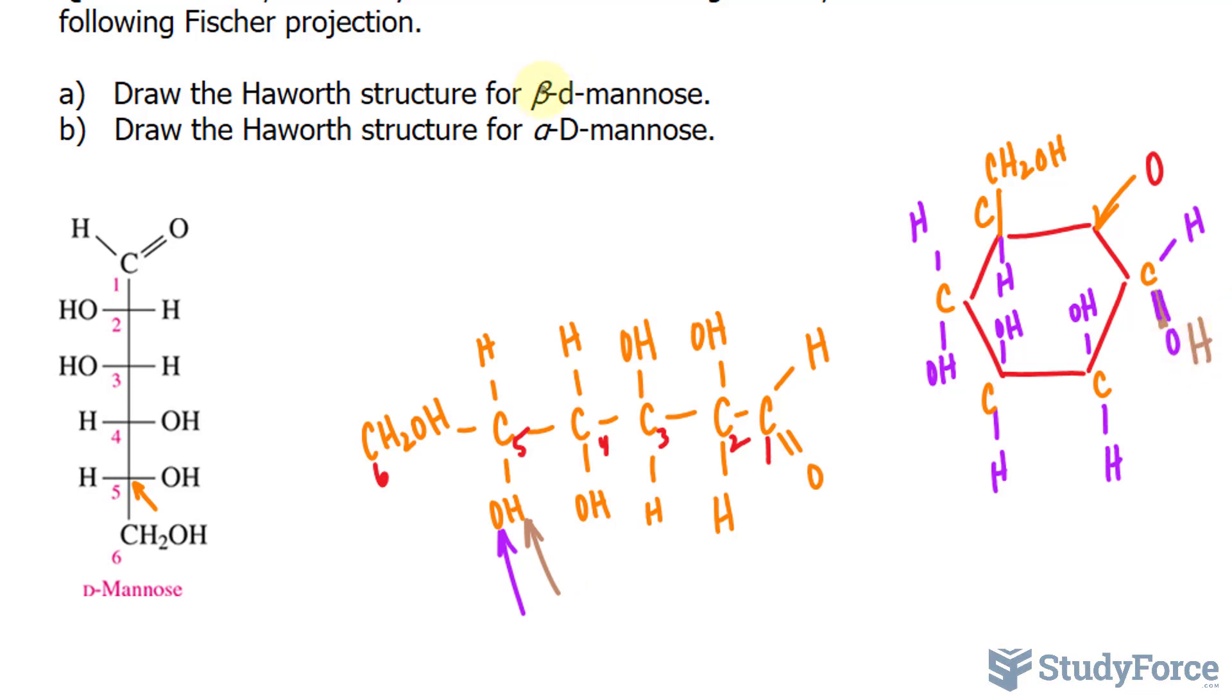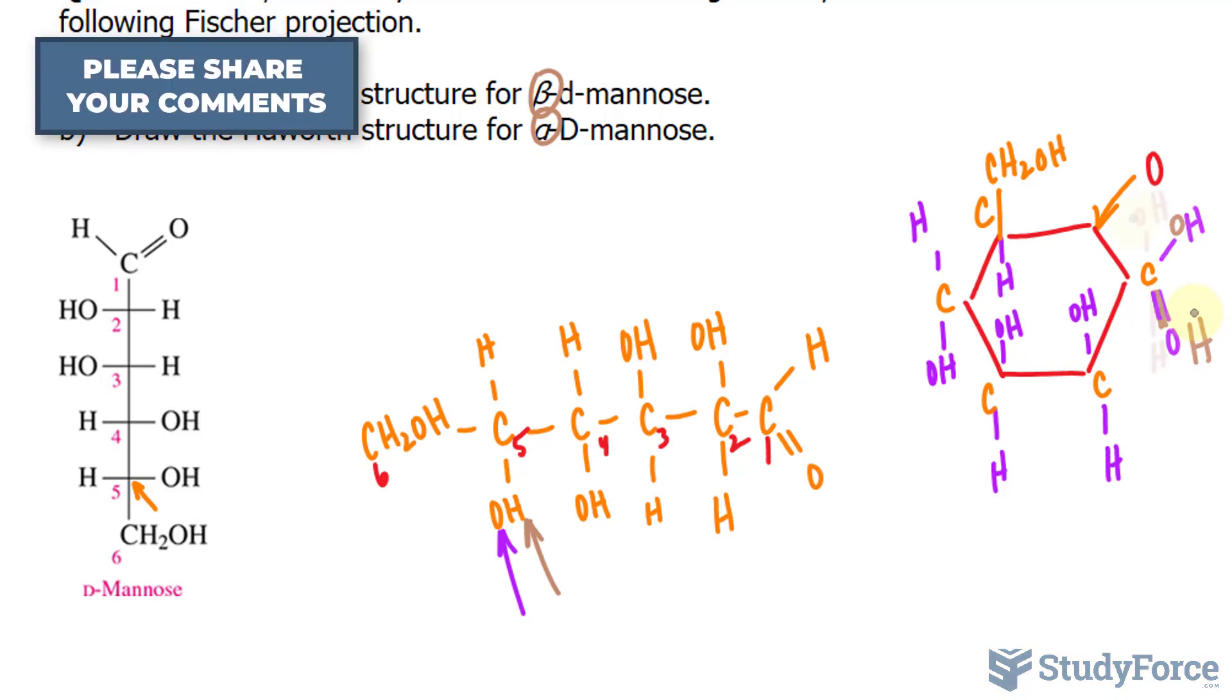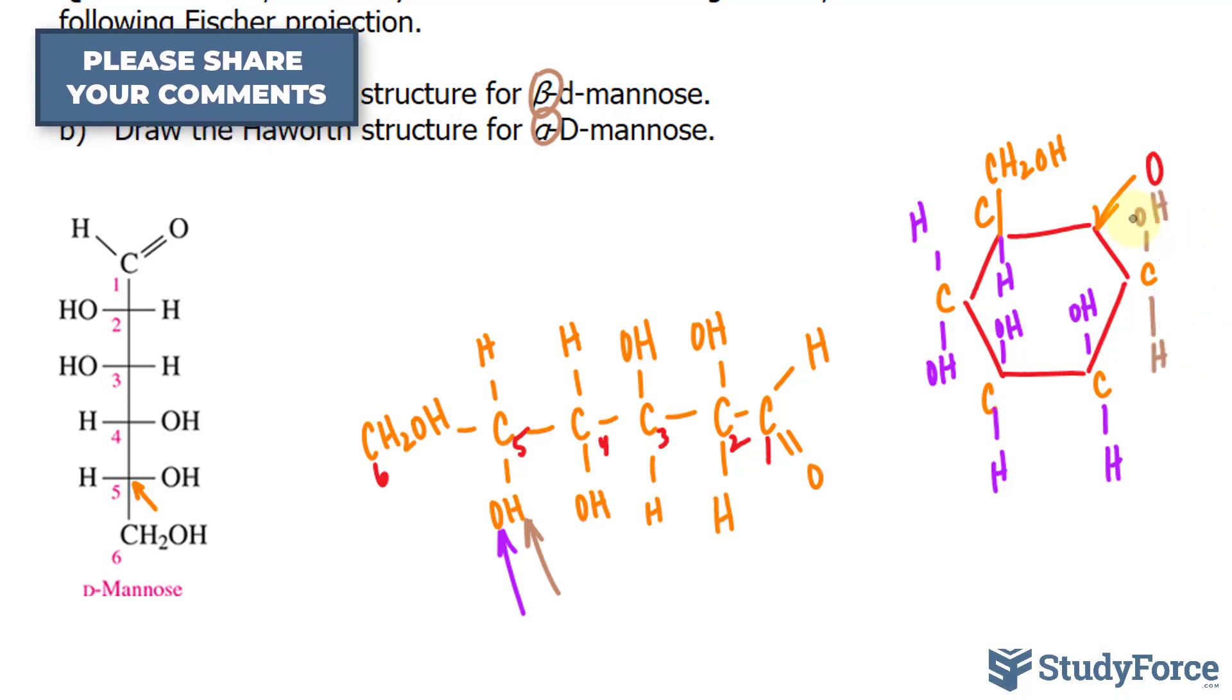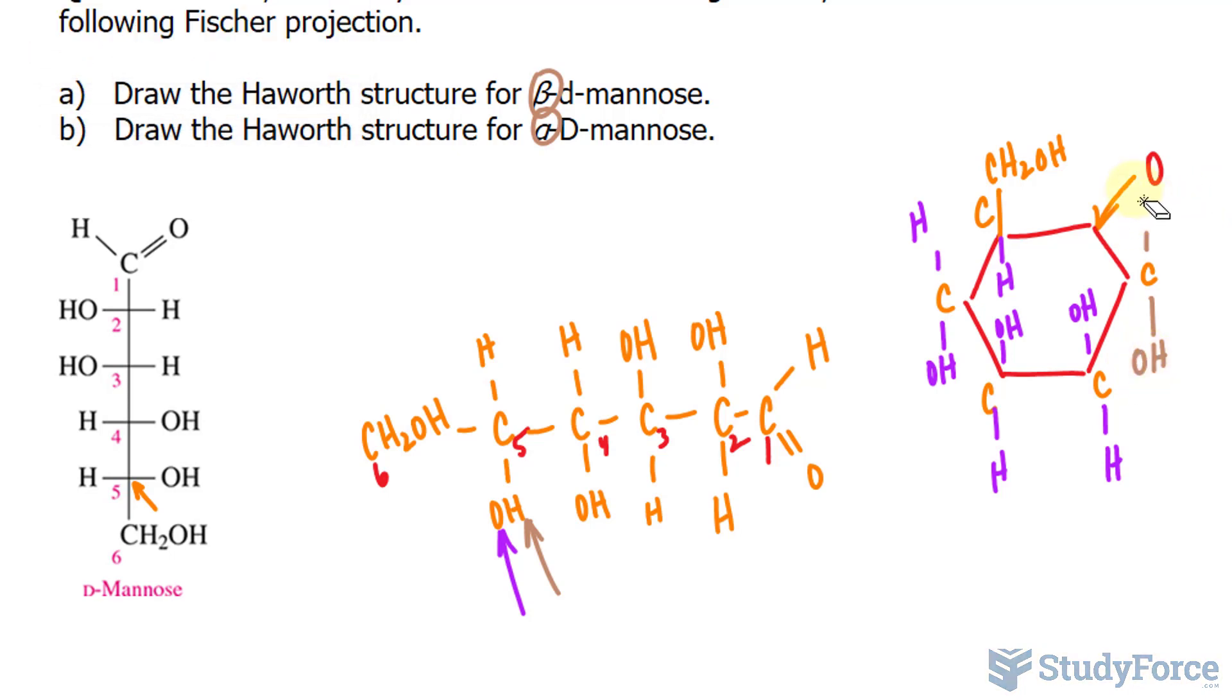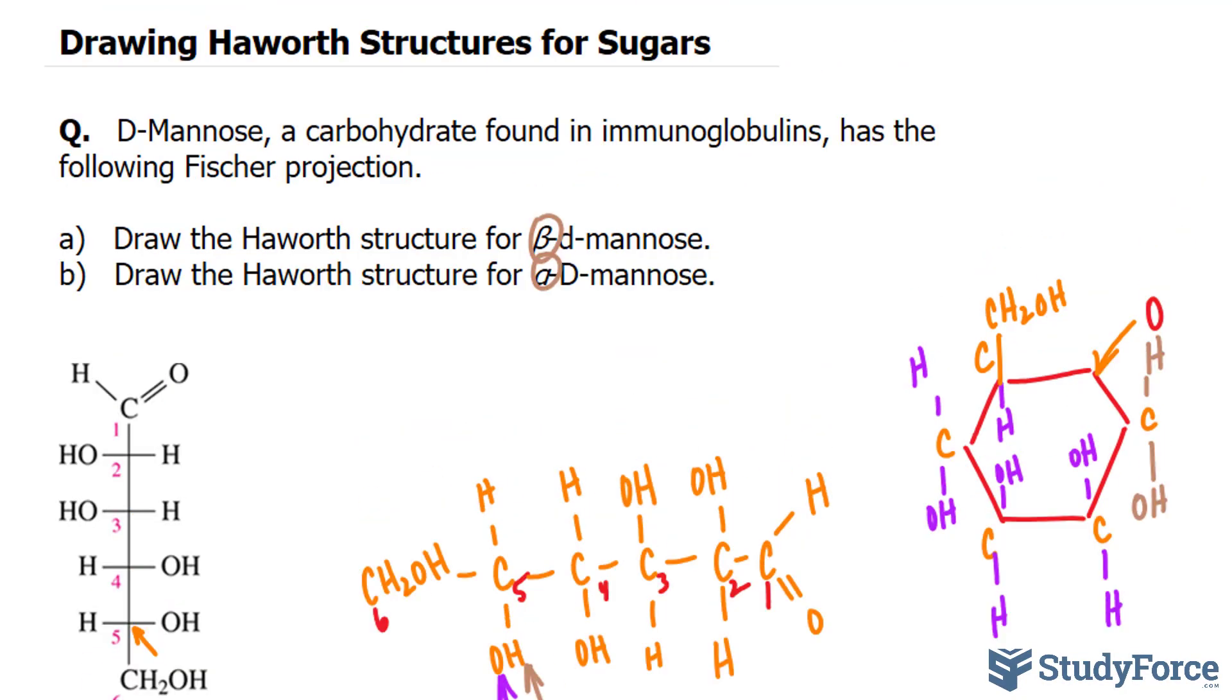Now as I mentioned, the beta and alpha tell us the positioning of these atoms. In fact, when you have a beta enomer, the OH is at the top. So we should have OH here and hydrogen down there. For question B, they want the alpha enomer. So in that case, the OH is down here and the hydrogen is up here. And there you have it. That is how to draw a Howarth structure for sugars.